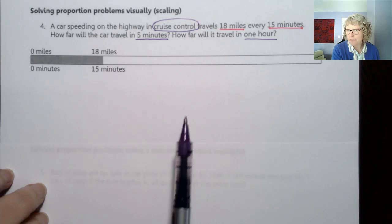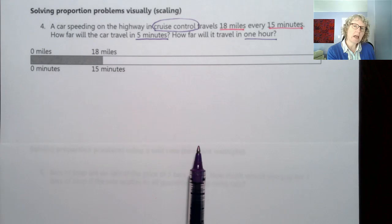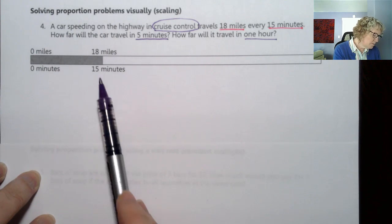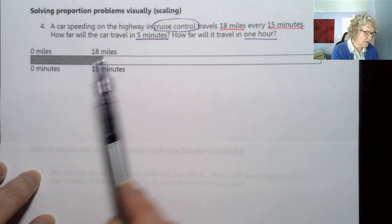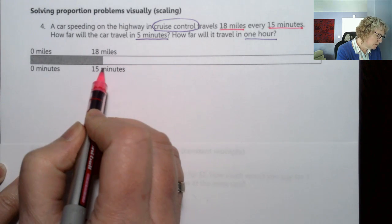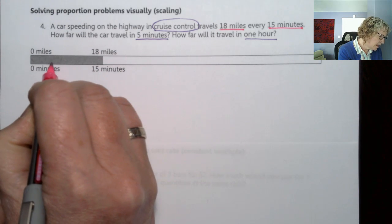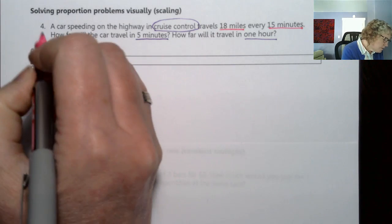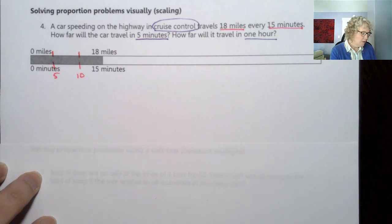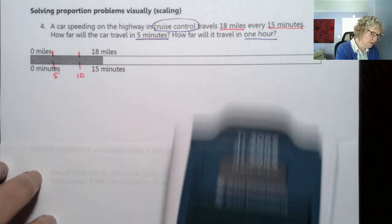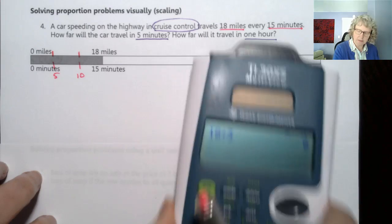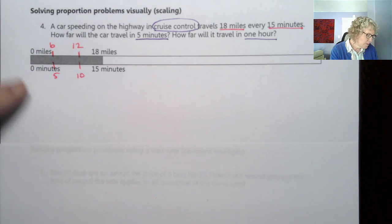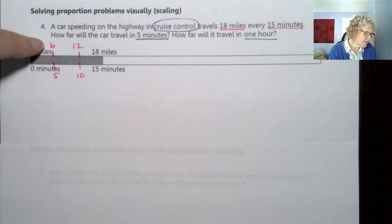We can use this to scale as long as it kind of goes in evenly or we have nice numbers. Fifteen minutes, we need to think about how can we get that to 5 minutes. It's definitely smaller so it's going to go over to the left. Zero to 15 is really like a third, right? If I count by 5's: 5, 10, 15. So I'm going to mark every third. Then we're going to mark the same on the top of the bar. We need to cut this 18 into thirds as well. 18 divided by 3 is 6. So we have 6, 12, 18.